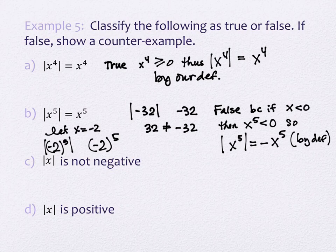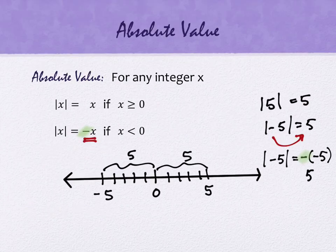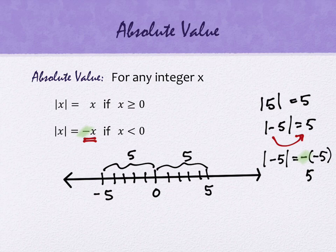Next: is the absolute value of x not negative — true or false? That is a true statement. You can justify it by talking about the fact that absolute values are distances, and distances aren't negative. You could also go back to the definition: the first case starts with a positive and ends with that same positive; the second case starts with a negative and putting an additional negative on it makes it positive.